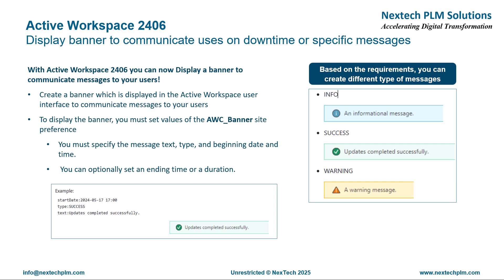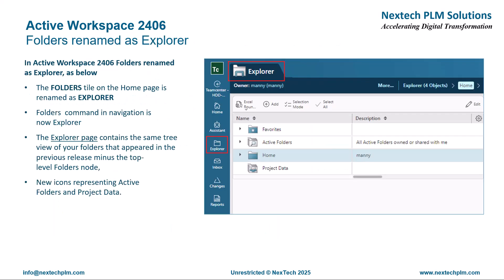You can create the banner by setting the AWC_banner site preference, and specify the message text, type, and beginning date and time. You can optionally set an ending time or a duration. Similarly, Active Workspace 2406 has renamed the Folders tile to Explorer, where the Explorer page contains the same tree view of your folders that appeared in the previous release, minus the top-level folders node. This improved the overall data organization.